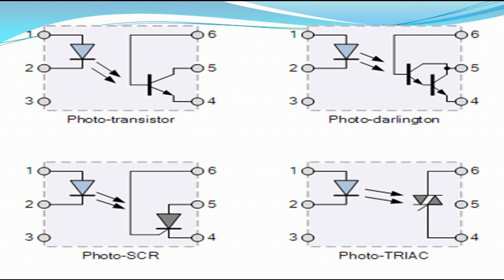The device converts the electrical energy into a beam of light using a light-emitting diode, and then directs it towards a light sensor, such as a photodiode or phototransistor, which converts the optical energy back to electrical energy. This isolates the two circuits, prevents voltage spikes, and reduces noise and interference associated with communication connections.